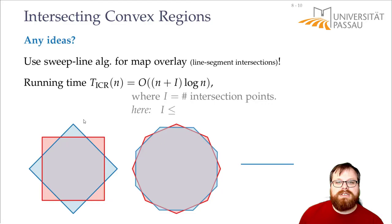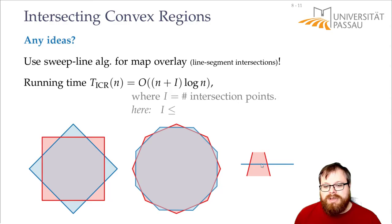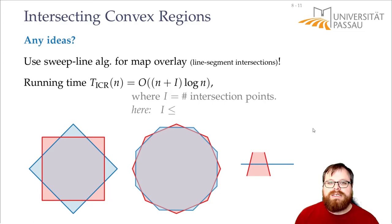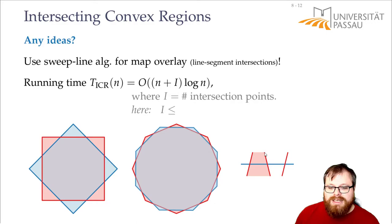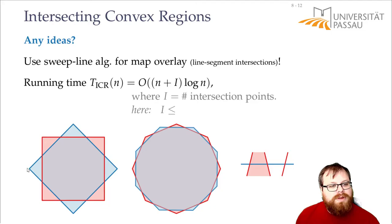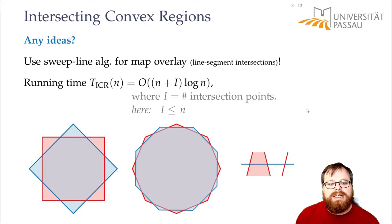Is 2n true in general? Consider a single edge of a convex region — it can be intersected at most twice by the second convex region. If intersected twice, the segment between those intersections must lie inside the other convex region (by convexity). A third intersection is impossible: the boundary would have to cross through the convex region, contradicting its definition. So every edge is intersected at most twice. With n/2 corners in each polygon, we get at most n intersection points total.